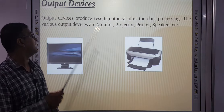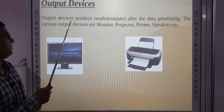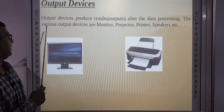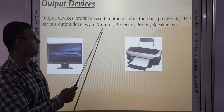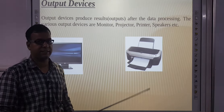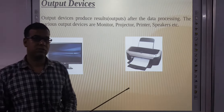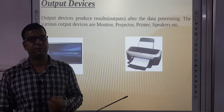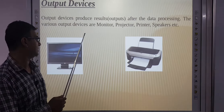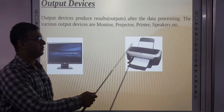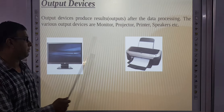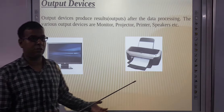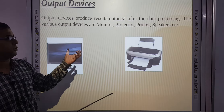Next are output devices. Output devices produce results after data processing. The various output devices are monitor, projector, printer, speaker, etc. Jo bhi result hai, us result ko kisi device pe show karna hoga — woh sabhi devices output devices hoti hain. Monitor, printer, aur projector pe humara output show hota hai.